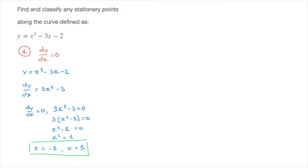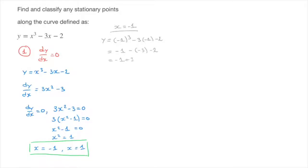To fully identify the stationary points, we need to calculate their y-coordinates. We substitute x equals negative 1 into our function: y equals negative 1 cubed minus 3 times negative 1 minus 2, which equals negative 1 plus 3 minus 2, giving y equals 0. So one stationary point has coordinates negative 1, 0.